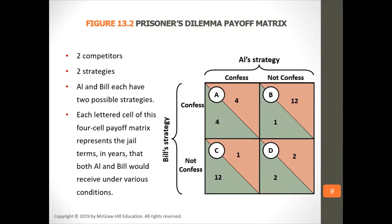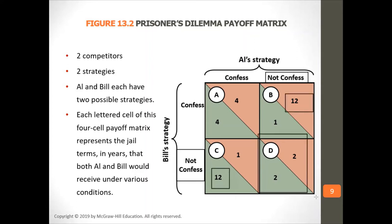In the prisoner's dilemma, there are two competitors and two strategies. If they both confess, they each get four years. If one doesn't confess and the other confesses, the one that doesn't confess gets 12 years and the one who confesses gets one year. If they both don't confess, they get two years each; if they both confess, they get four years each. What usually happens is they both end up confessing, because if you confess while the other doesn't, you get only one year — but if they both confess, they both get four years.